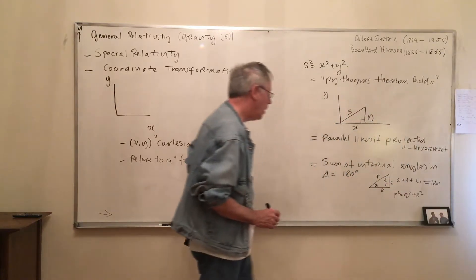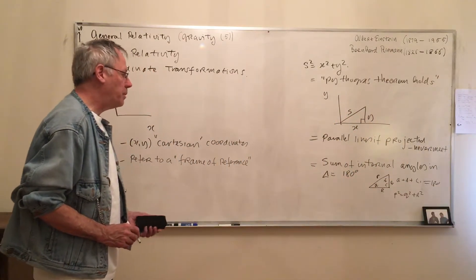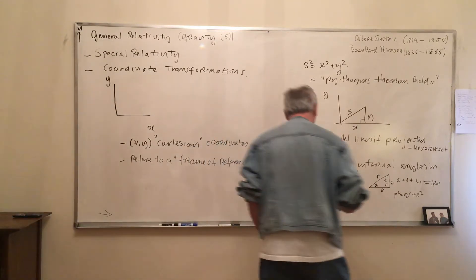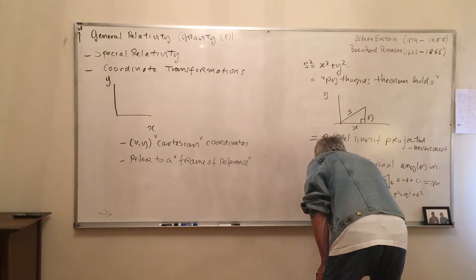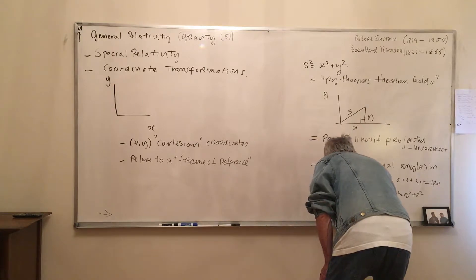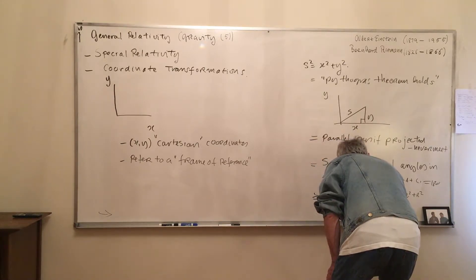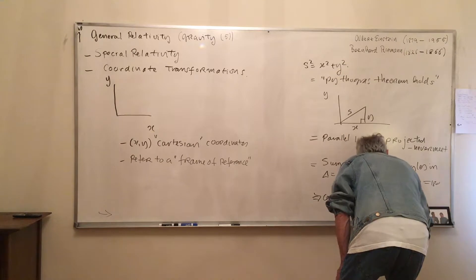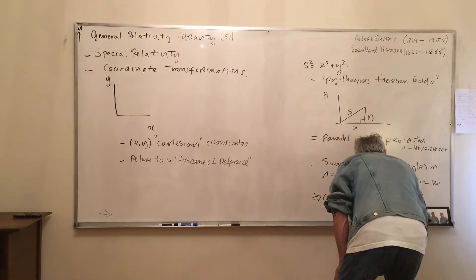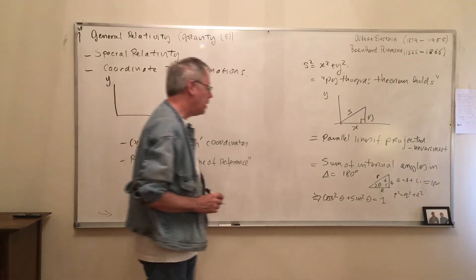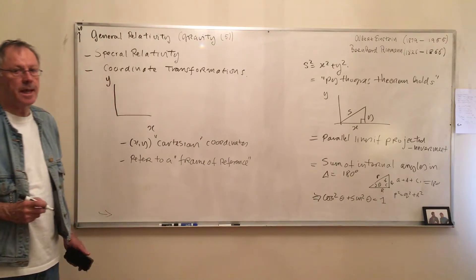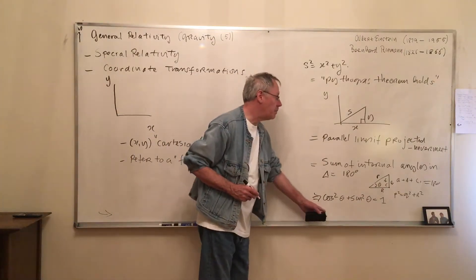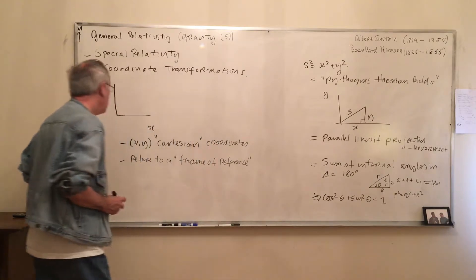Pick q and r: p squared equals q squared plus r squared — Pythagoras' theorem. And Pythagoras' theorem also says: take any angle theta, cos squared theta plus sin squared theta equals 1. This is really Pythagoras' theorem.